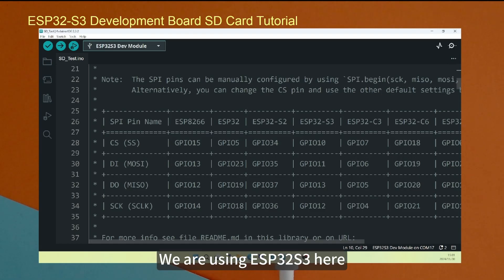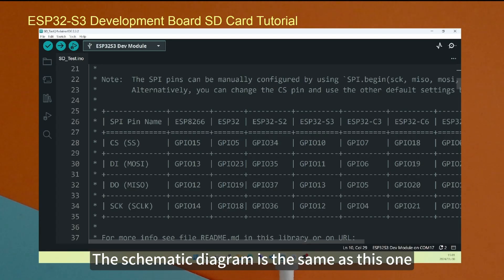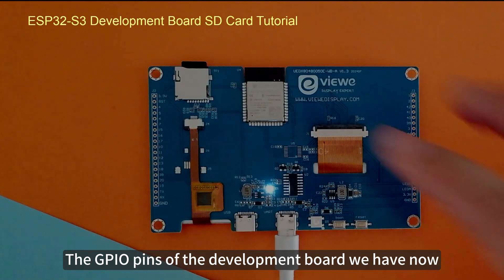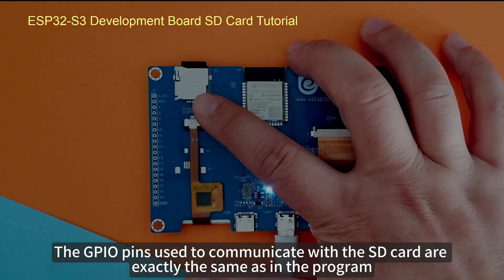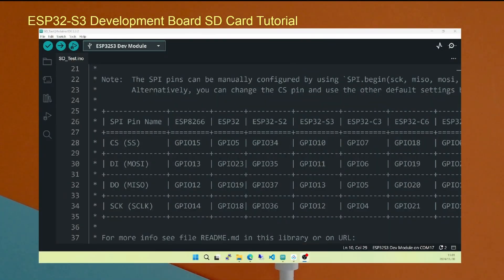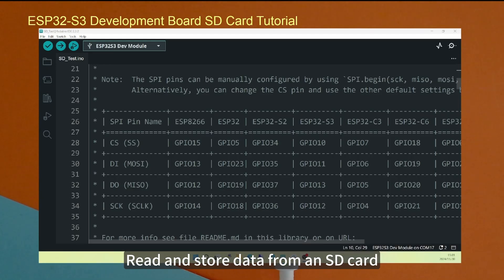We are using ESP32-S3 here. I also checked the corresponding schematic diagram of the development board. The schematic diagram is the same as this one. That is to say, the GPIO pins of the development board we have now, the GPIO pins used to communicate with the SD card are exactly the same as in the program. The official recommendation is followed and the GPIO pins 10, 11, 13 and 12 are used to read and store data from an SD card.